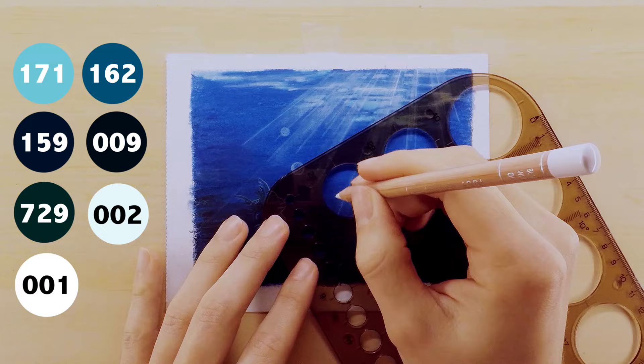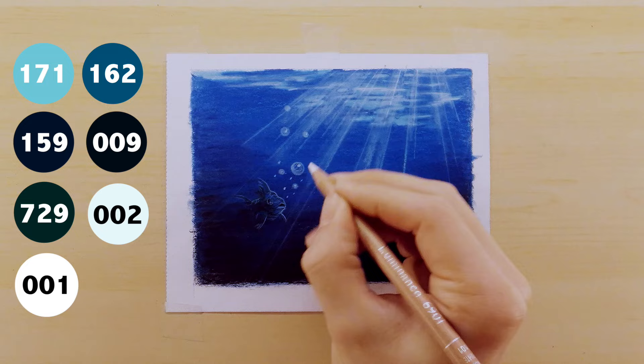The next thing I do is I use my circle stencil to create the bubbles using the white, then I just shade them a bit with the black and highlight them with a little bit more white.